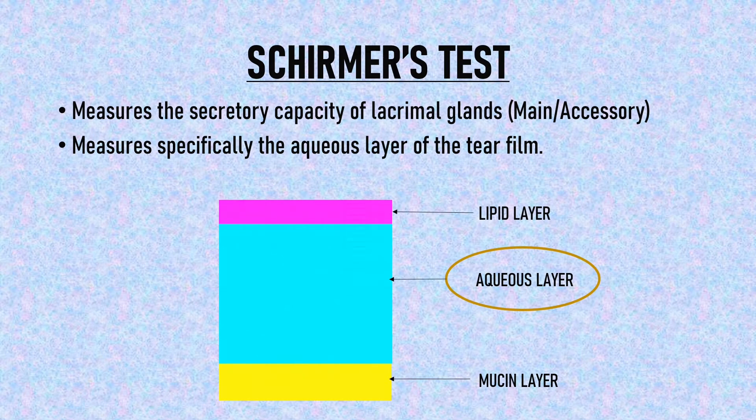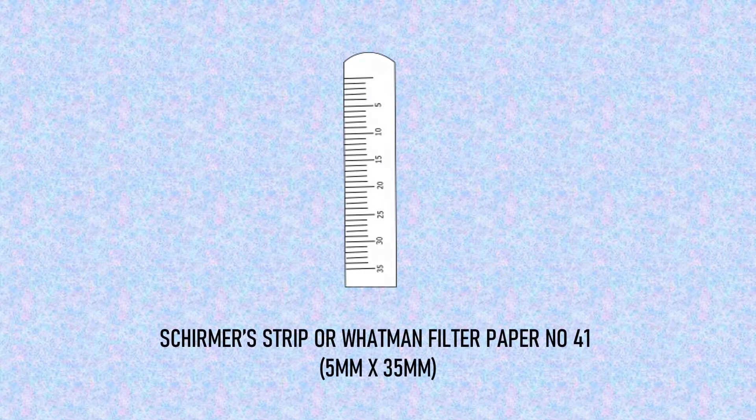Schirmer's test is done using commercially available Schirmer's strips, or it can be done using Whatman filter paper No. 41. The size of the strip is 5 mm by 35 mm.